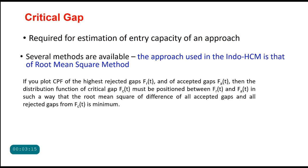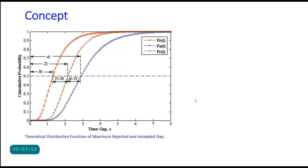If you plot cumulative probability function of the highest rejected gap F(R)t and of accepted gaps F(A)t, then the distribution function of critical gap F(C)t must be positioned between F(R)t and F(A)t in such a way that the root mean square of difference of all accepted gaps and over-rejected gaps from F(C)t is minimum. You can understand this concept using this distribution.